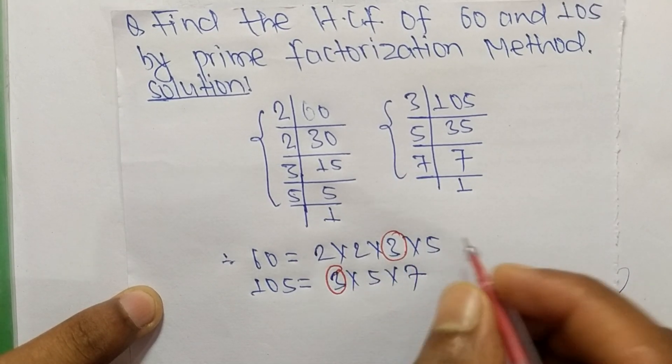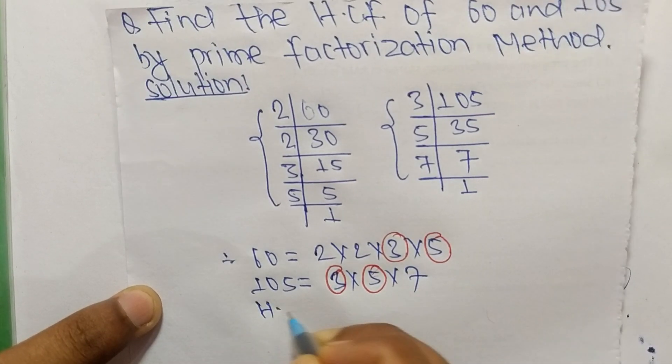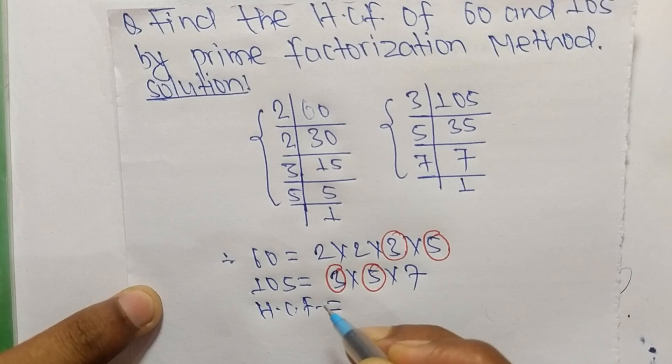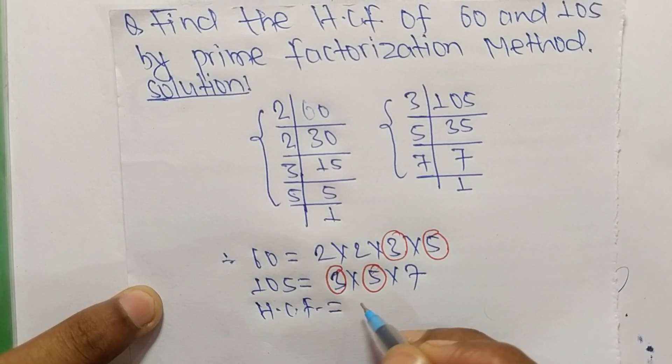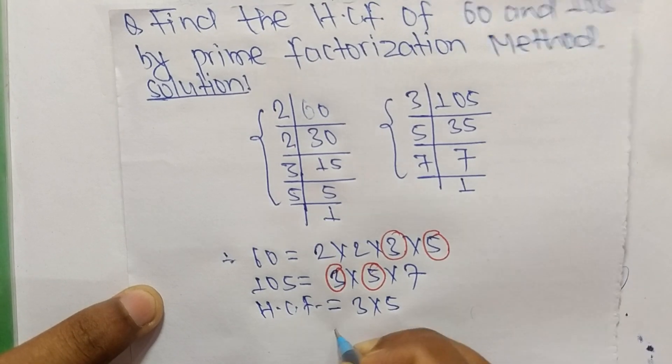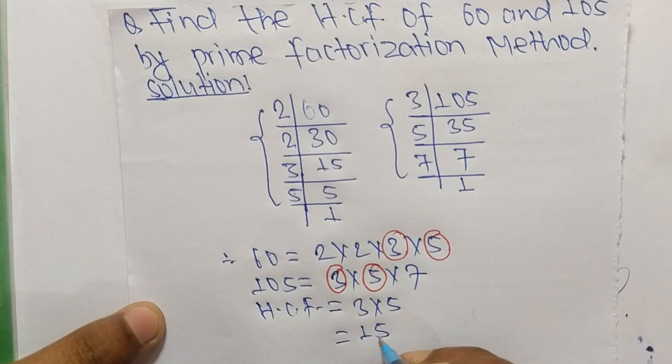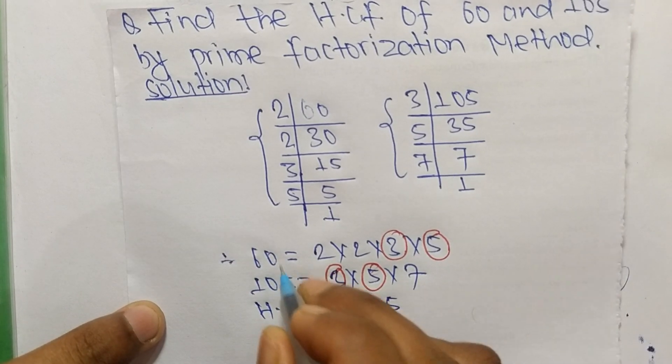So its HCF is equal to the product of common factors which are 3 and 5. So 3 times 5 mean it is 15. So 15 is the HCF of 60 and 105.